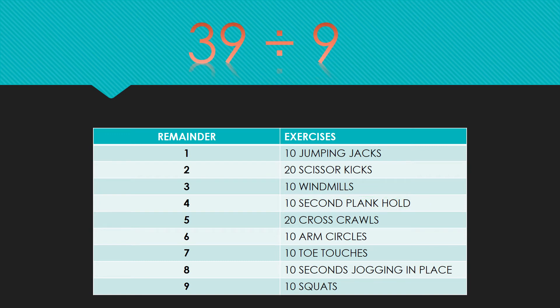Our next problem is 39 divided by nine. Take a minute to solve this problem by pausing the video and then hit play to see if you are correct. You should have come up with four and a remainder of three, which equates to 10 windmills.